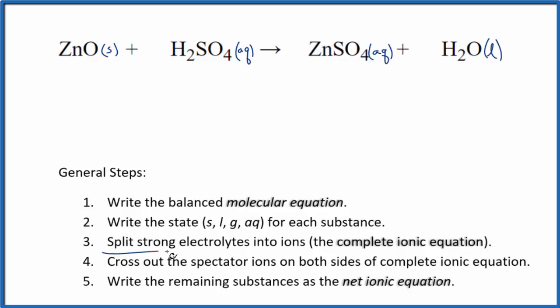Now we can split the strong electrolytes into their ions. This will give us the complete ionic equation. In net ionic equations, we don't split apart solids, so we're going to just keep this as ZnO. And I'll write the states later.